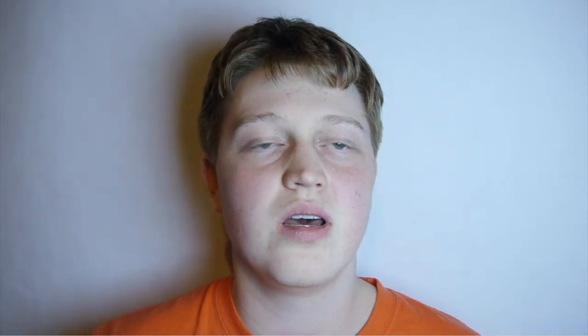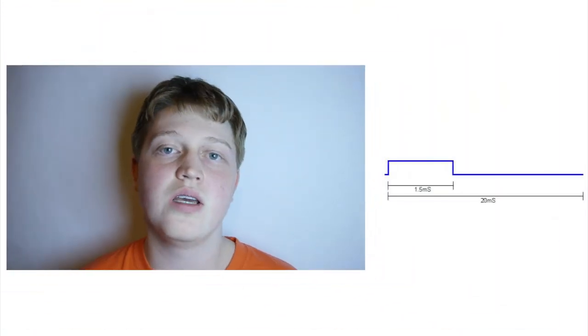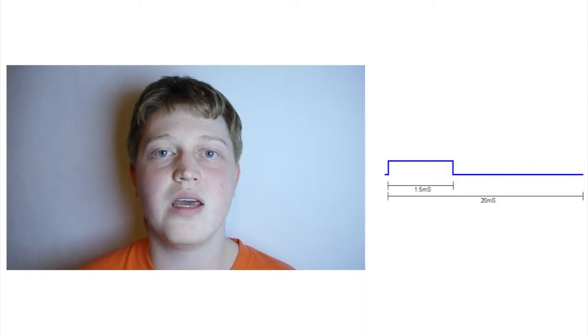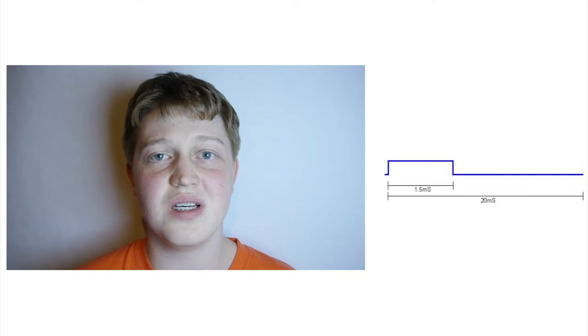Before I move on, I've got to explain a couple of words to you. The first word is period. Period is just the word for how long it takes for a graph to repeat itself. If you look on this graph over here, you can see that the 20 millisecond part is the period. So that graph will repeat every 20 milliseconds.